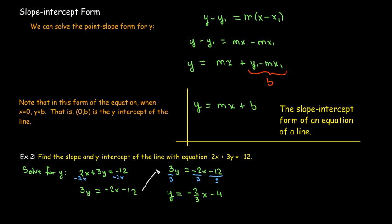That tells me that the slope, the number multiplied by x here, is negative 2/3. And the y-intercept is (0, -4). Again, the y-intercept is a point. It has an x-coordinate and a y-coordinate written inside parentheses. So our y-intercept is (0, -4).